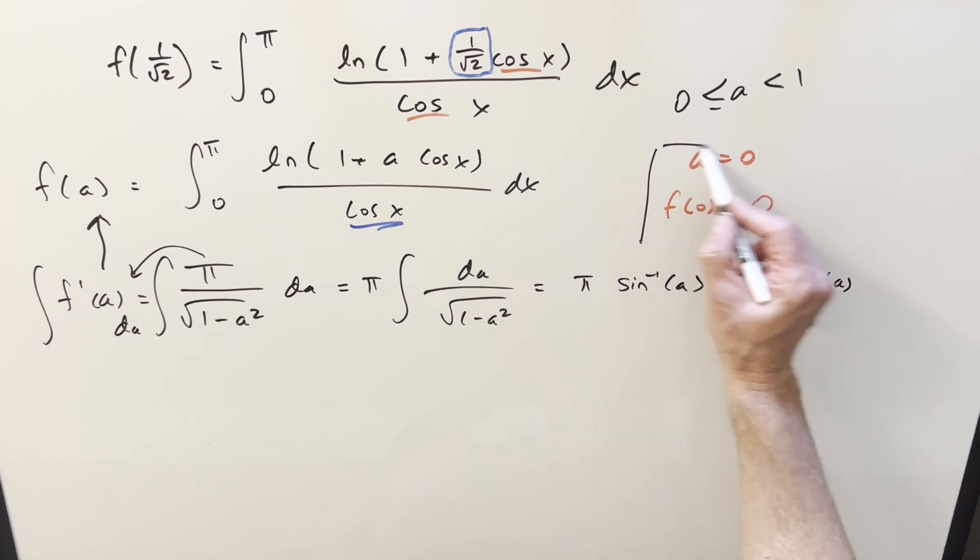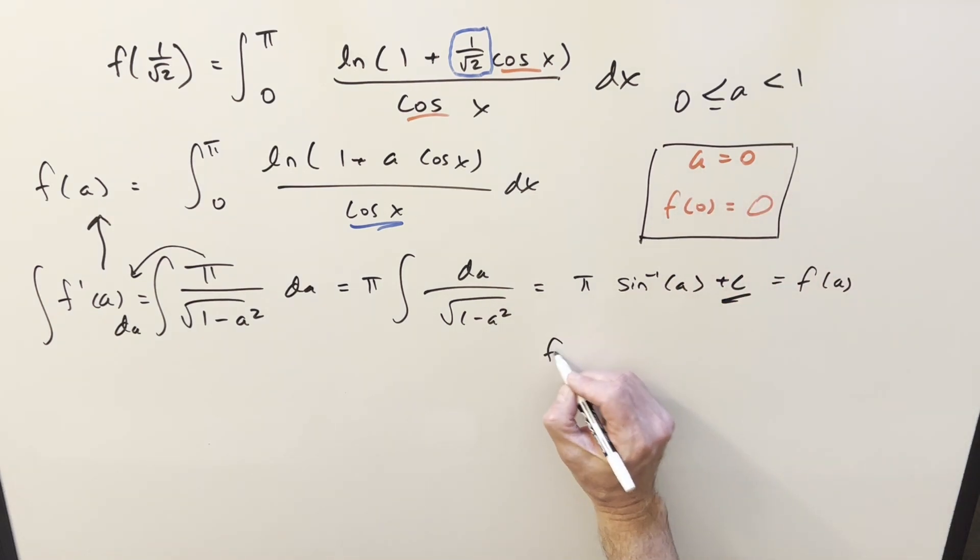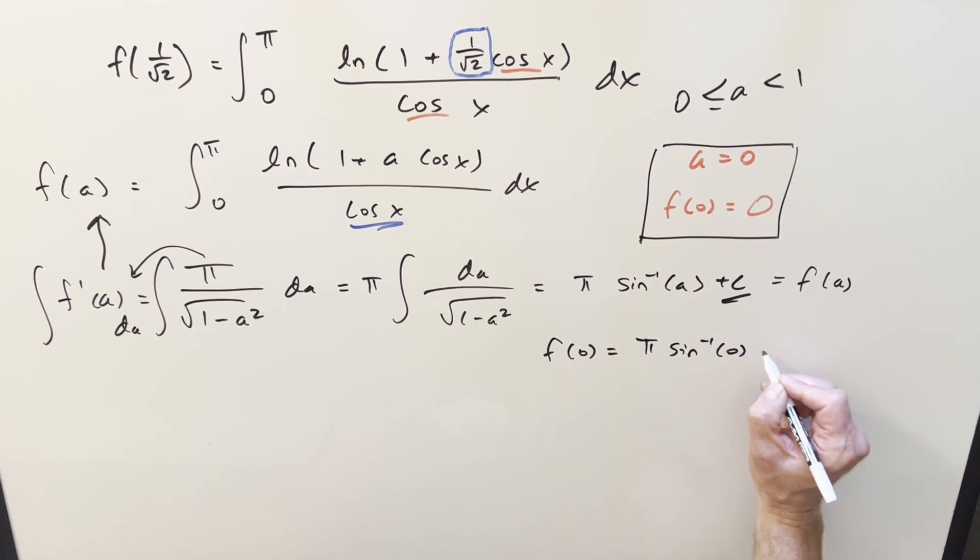But now we don't want the plus c, so we can go back and use what we found earlier, that at zero we should get back zero. So if we take this, we plug in a zero for a, we're going to have pi arc sine of zero plus c equals zero. Arc sine of zero is just zero, so that means we need c to be zero. And so in our formula, let's just make this go away, and now we've got a pretty simple formula here that our f of a is just going to be pi arc sine of a.